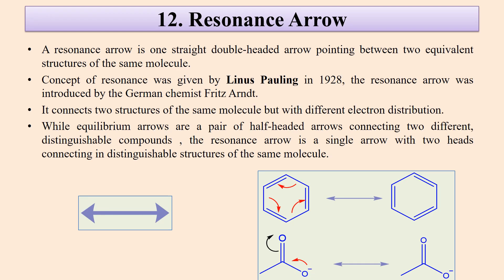Then there is the resonance arrow, which is a straight double-headed arrow pointing between two equivalent structures of the same molecule. Here are the two resonance forms of benzene shown by a resonance arrow. It is also used for a carboxylate, where two resonance forms are shown by a resonance arrow.